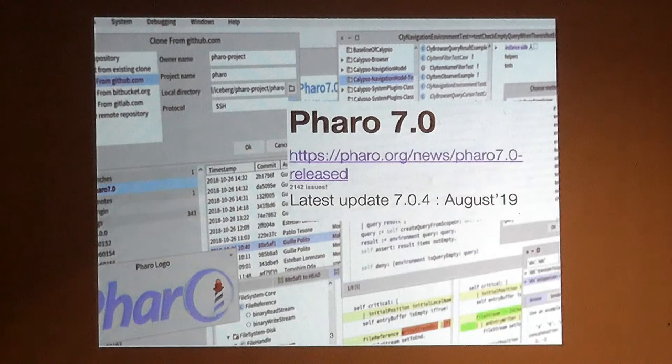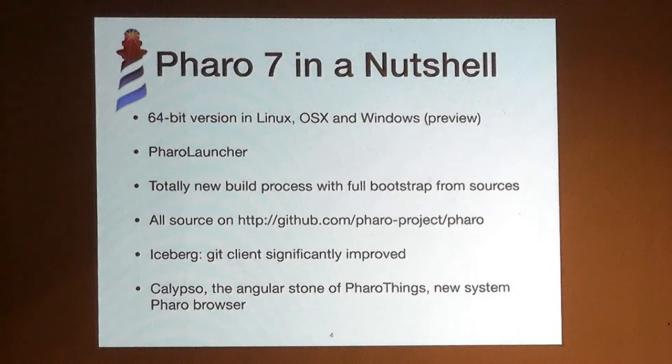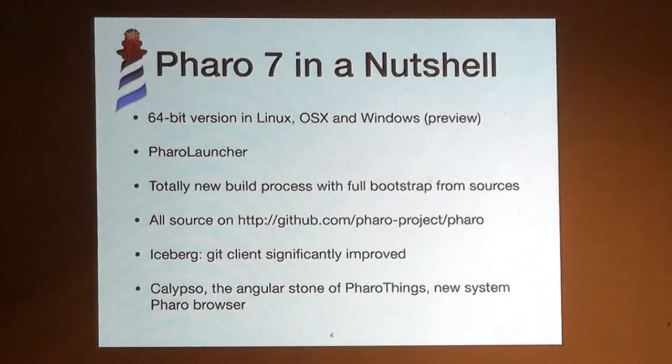This year we presented the latest release of Pharo, which is Pharo 7. This release was important for us because it was the beginning of having 64-bit versions for Linux and macOS as the regular version, and for Windows as a preview. We also did a new version of the Pharo launcher that allows us to manage different images and different versions.